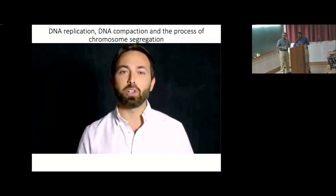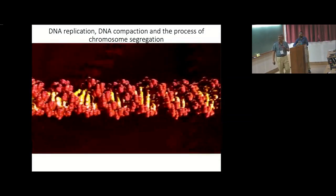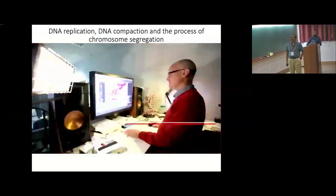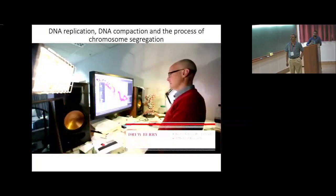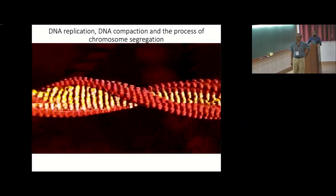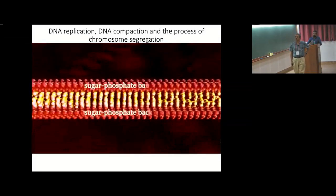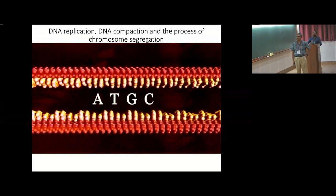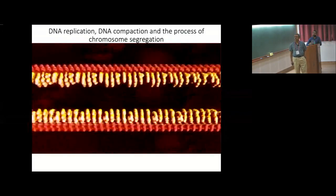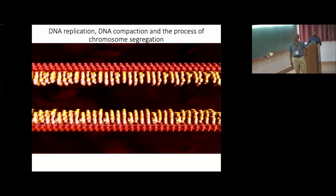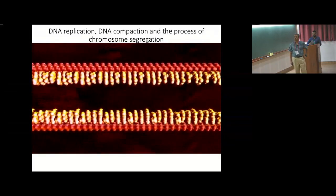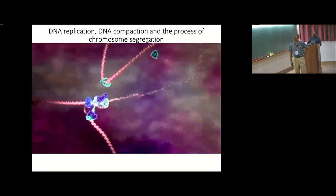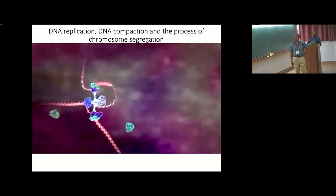Mitosis requires an army of tiny molecular machines. DNA is a good place to start—the double helix molecule we always talk about. This is a scientifically accurate depiction of DNA. If you unwind the two strands, you can see each has a sugar phosphate backbone connected to a sequence of nucleic acid base pairs known by the letters A, T, G, and C. The strands run in opposite directions, which is important when you go to copy DNA.